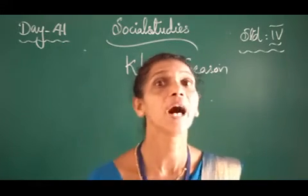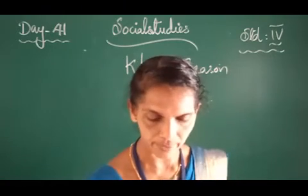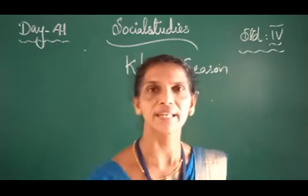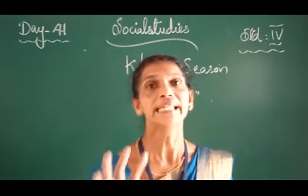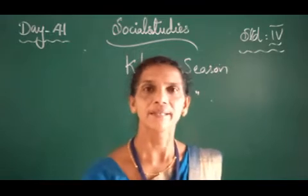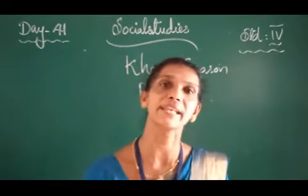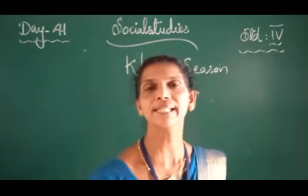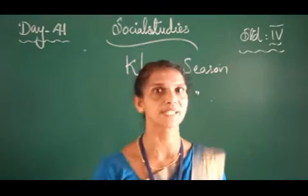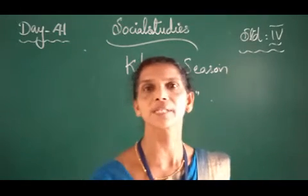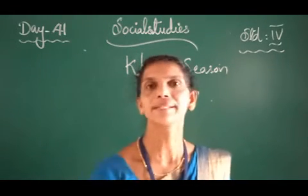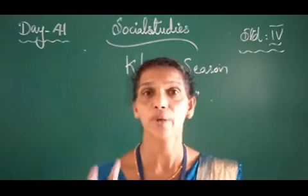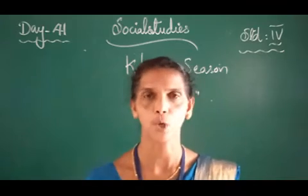They are harvested in September or October. So, in Kharif season, the seeds are sown in May and June, and they start growing. When they are fully grown, farmers harvest them in September or October. The best example of Kharif crops is rice.